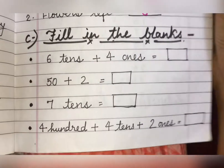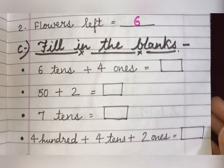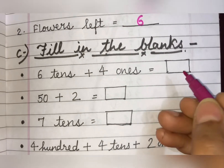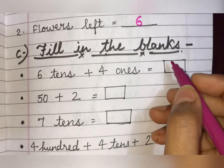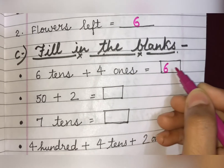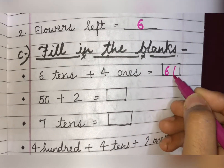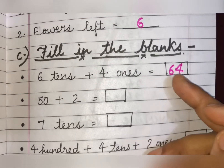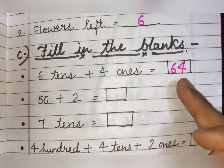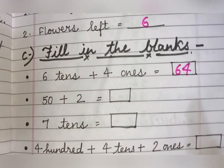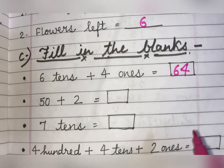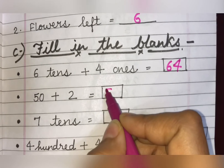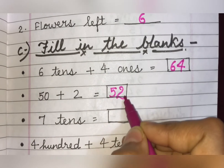Fill in the blanks. First: 6 tens plus 4 ones — the answer is 64, because 4 ones go in the ones place and 6 tens give us 60. Next: 50 plus 2 — that is very easy — the answer is 52.